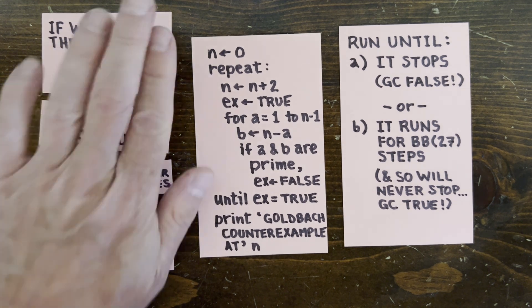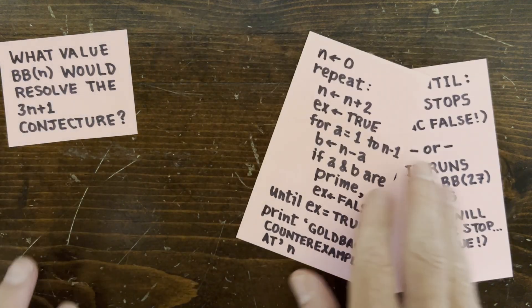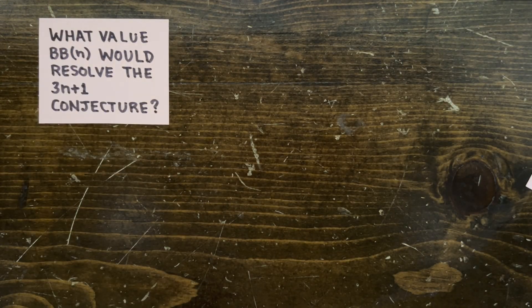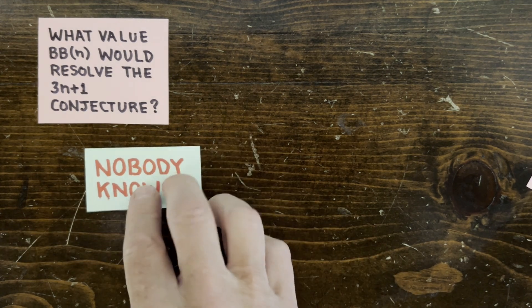Now, instead of Goldbach's conjecture, what about the 3n plus 1 conjecture? Would some value of BB(n) give us a mechanical resolution of this conjecture? Well, nobody knows, and here's the reason.